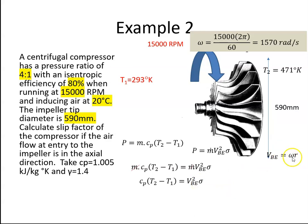VBE is equal to omega R. We have omega, and R is just half of 590. So VBE is 463 meters per second.